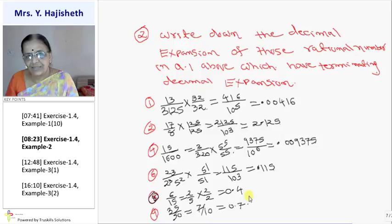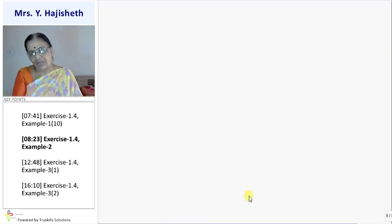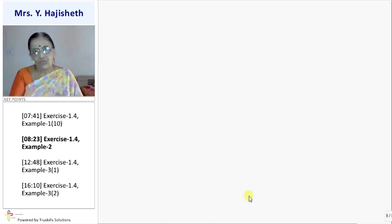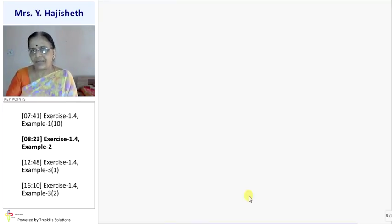So the second sum is essentially derived from the first sum — the numbers identified as terminating in question 1 are the ones we now convert into terminating decimal form.